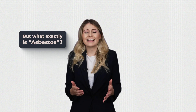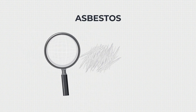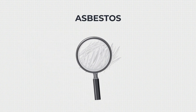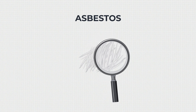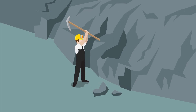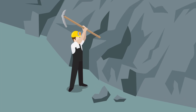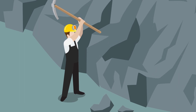But what exactly is asbestos? Asbestos is the generic term for fibrous mineral silicates and is an element that is mined from the ground all over the world.